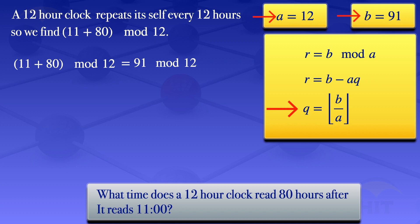The quotient is the floor value of 91 divided by 12, and that floor value equals 7. So we now have our quotient, and we have the values of a and b.